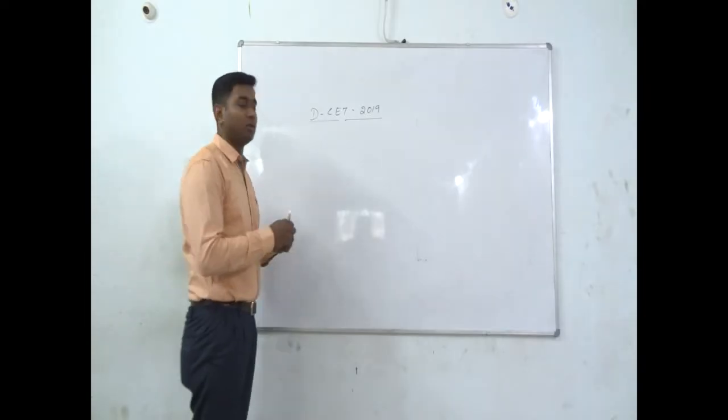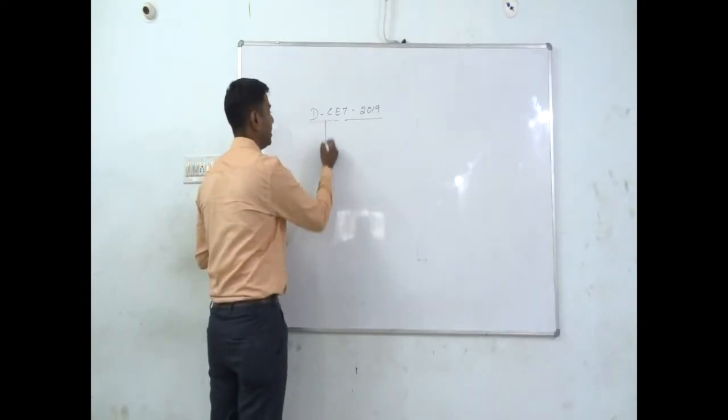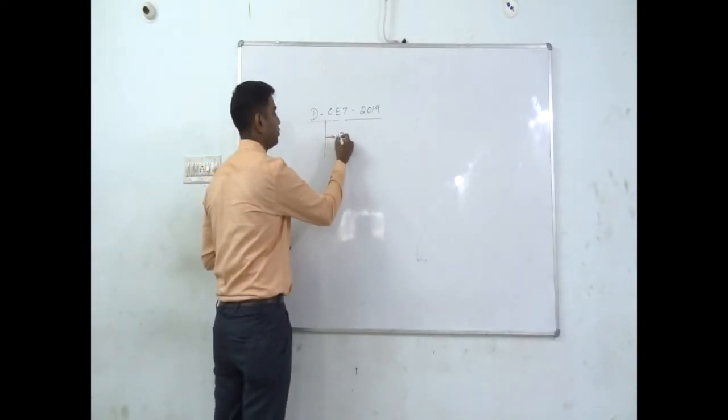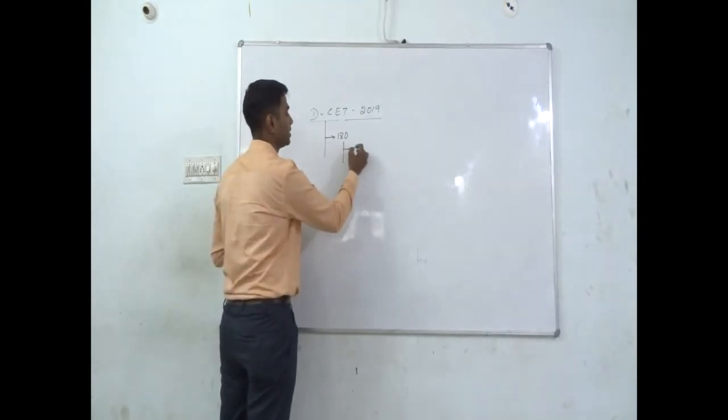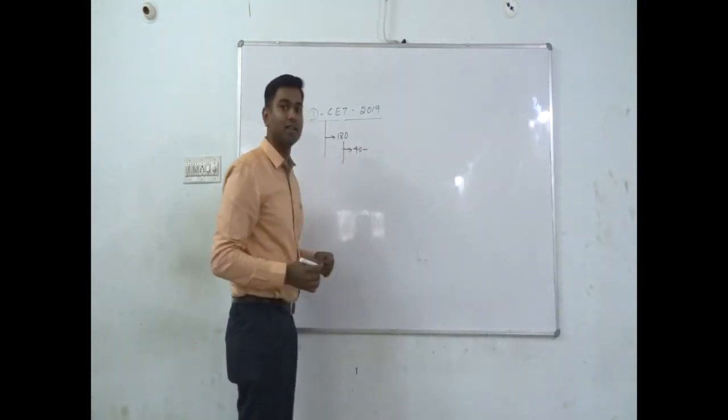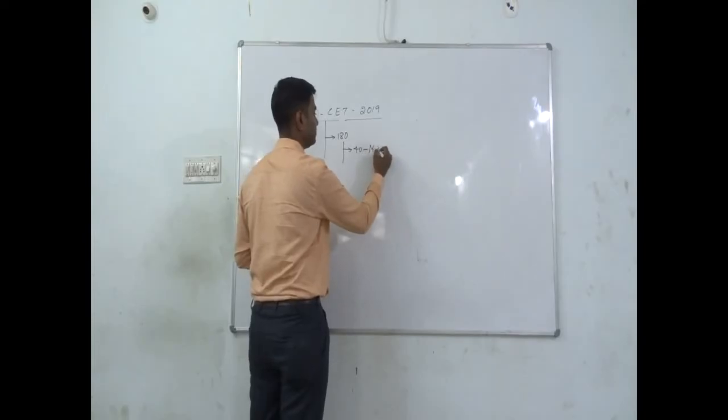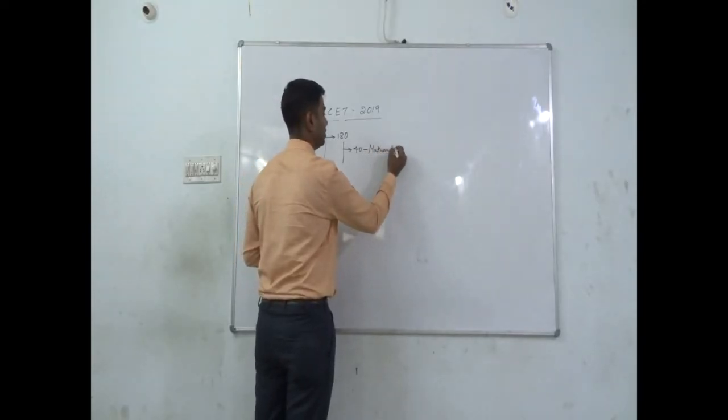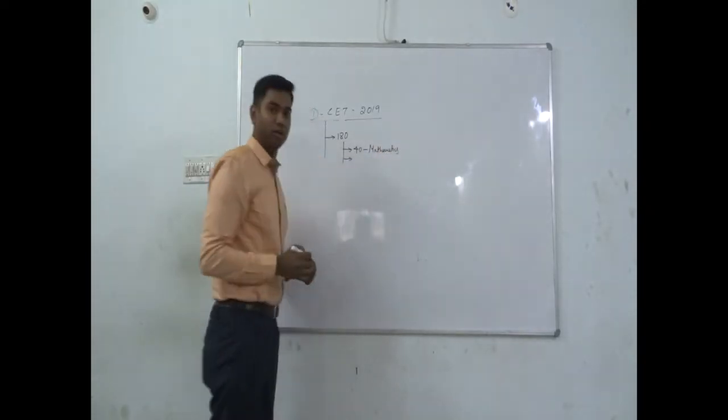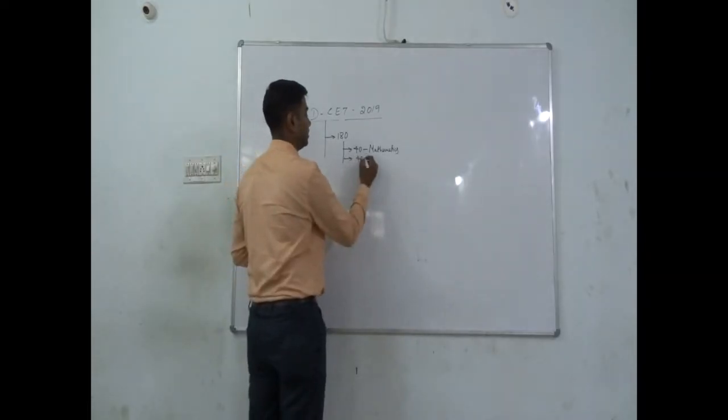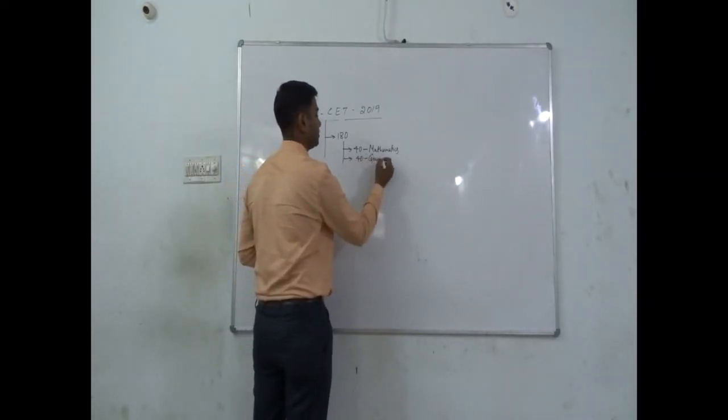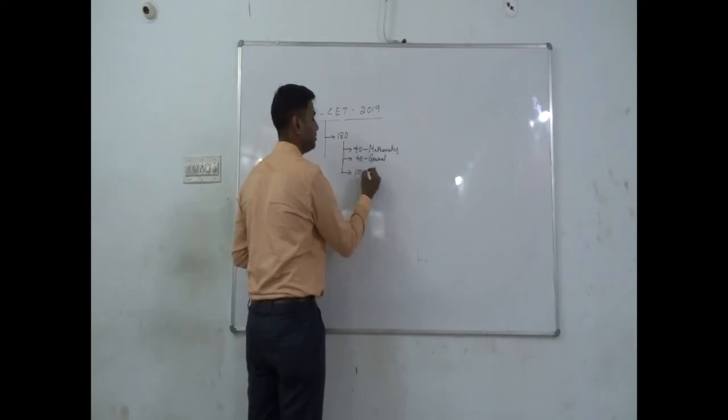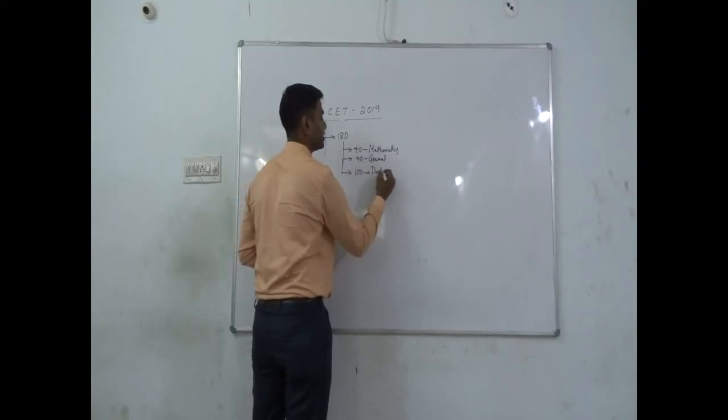To give a brief introduction about Diploma CET, the main aspects are it is a 180 marks exam, out of which 40 marks is separately assigned for Mathematics. Next, another 40 marks is for the general syllabus, and the complete 100 marks is for the departmental subject.